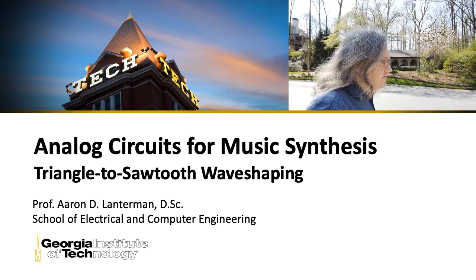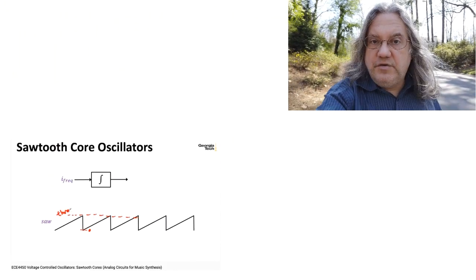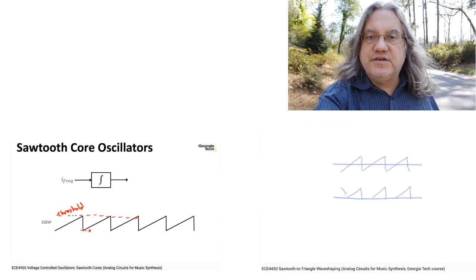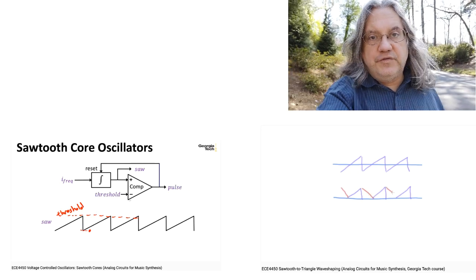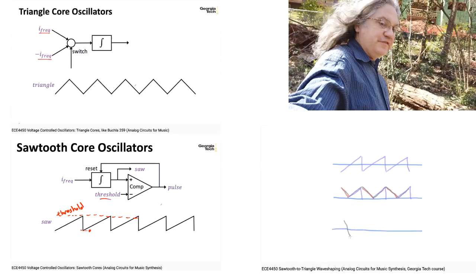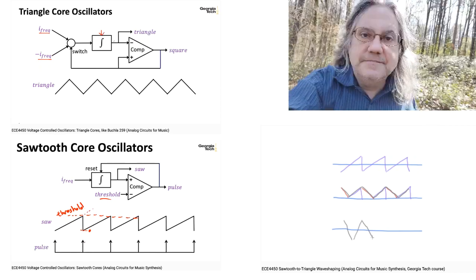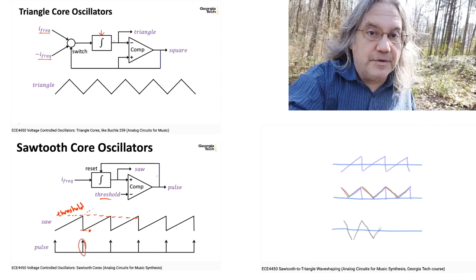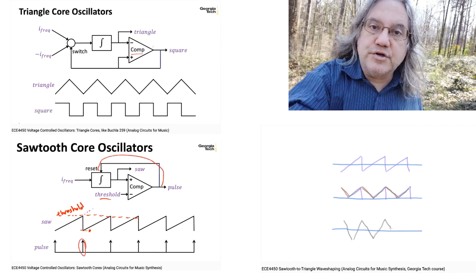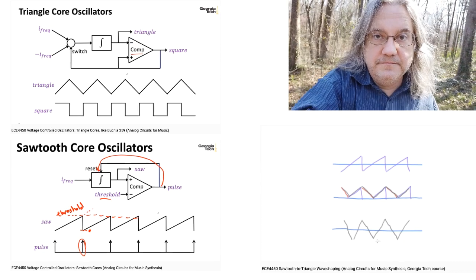Previously in this lecture series, we've looked at circuits that can generate sawtooth waveforms and circuits that turn those sawtooths into triangles. And then we looked at circuits that natively generate triangle waveforms. So today we're going to complete the square by learning how to turn triangle waveforms into sawtooth waveforms.